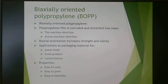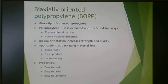When you biaxially orient polypropylene, you increase both the strength and the clarity. You make very small crystallites that enhance the strength, but those crystallites are small enough that you don't create cloudiness. This is good for snack foods, fresh produce, and confectionery. It also creates something that's easy to coat, easy to print, and easy to laminate — helping overcome the waxy surface typical of polyolefins.